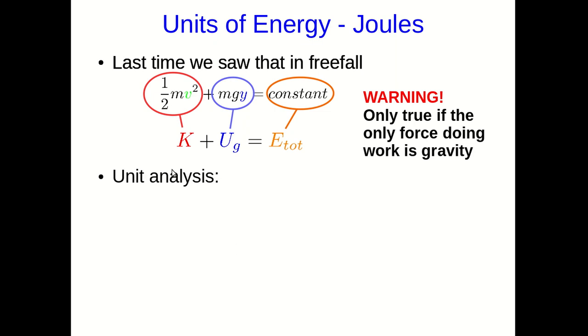Let's carry out a unit analysis quickly. So look at the kinetic energy. The mass is in kilograms. The speed here is in meters per second, and so we get kilograms times meters per second all squared. And if you look at the gravitational potential energy, you have the mass in kilograms, g is an acceleration so it's in meters per second squared, and this y here is a distance so it's in meters.